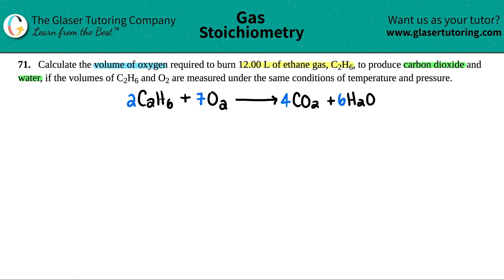Now let's just list what we got, right? We want to find the volume of the oxygen. That's this. So V equals question mark. And the only other number that they told us was that we're burning 12.00 liters of ethane gas, which is this. So I have this one. 12.00 liters, right? Now, how do I go from this to that, right?